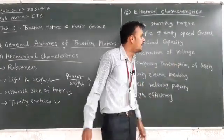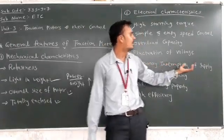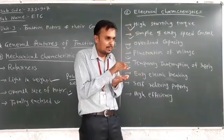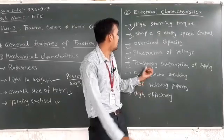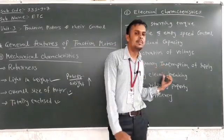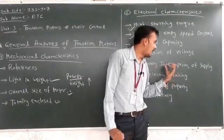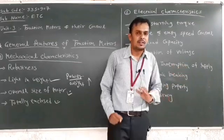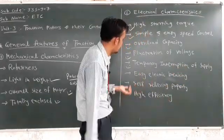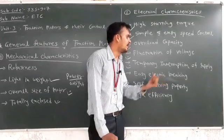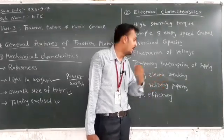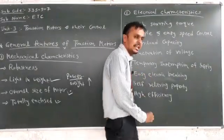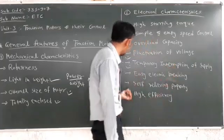Temporary interruption of the supply. Temporary interruption of the supply means line crossing or pantograph need to go down. In this moment the supply is cut, so the traction motor should be capable of temporary interruption of the supply. Easy electric braking means regenerative braking to use. Traction motor can brake using simple electric braking means regenerative braking system.